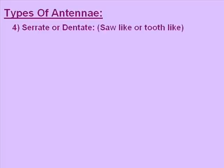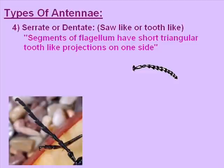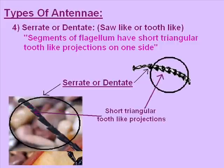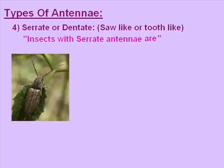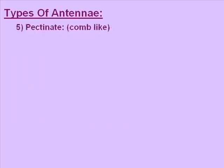Serrate or dentate antenna: the segments of the flagellum have short triangular tooth-like projections on one side. The arrows are pointing towards the serrate or dentate antenna. Insects with serrate antennae are click beetles and also pulse beetles.